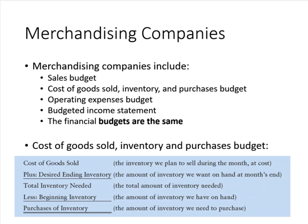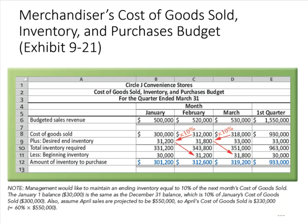The format of the budget is easy to remember because it follows the same name of the budget: we start with cost of goods sold, then consider inventory levels, and finally arrive at the amount of purchases to be made. For example, Circle J convenience store expects sales of $500,000 in January, $520,000 in February, $530,000 in March, and $550,000 in April. Management sets its prices to achieve a 40% gross profit, so cost of goods sold will be 60% of sales revenue. Management also wishes to have ending inventory equal to 10% of the next month's cost of goods sold, with all figures shown at cost.